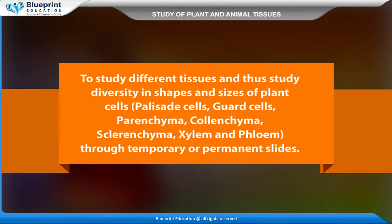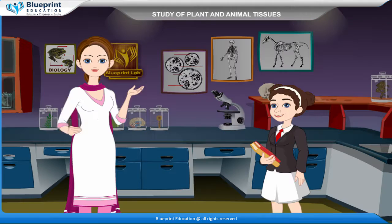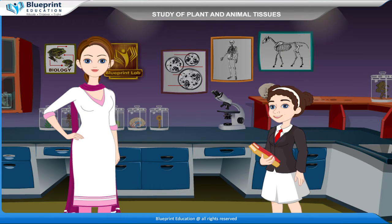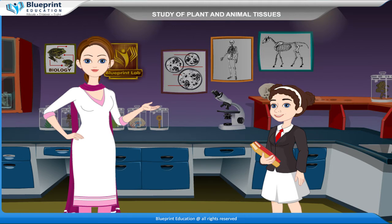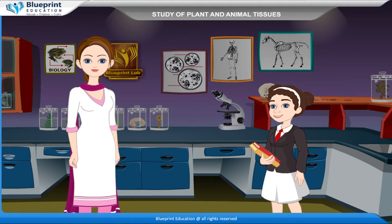To study different tissues and thus study diversity in shapes and sizes of plant cells — palisade cells, guard cells, parenchyma, colenchyma, sclerenchyma, xylem and phloem — through temporary or permanent slides. Tissue is a group of cells of the same type or mixed type having a common origin and performing identical functions.